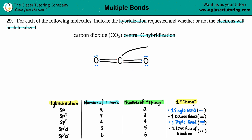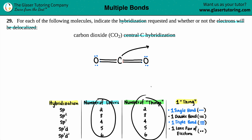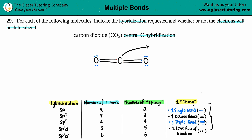Now we're going to find the hybridization of the carbon. Hybridization is just your orbitals meshing together to form overlap for your bonds. There's sp, sp2, sp3, sp3d, and sp3d2 hybridizations. The easiest way to memorize hybridization is just know how many letters there are: sp3 has four letters (one s and three p's), sp2 has three letters, sp has two. The number of letters corresponds to the number of 'things,' where one thing is one single bond, one double bond, one triple bond, or one lone pair.